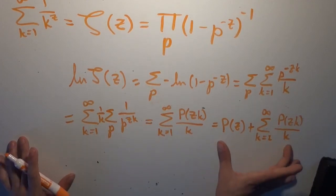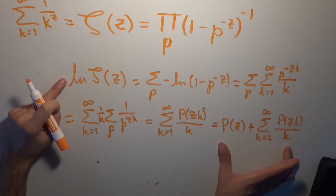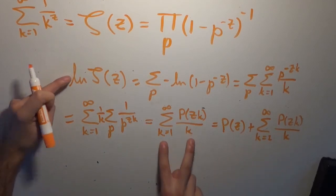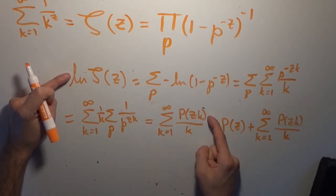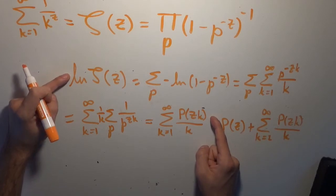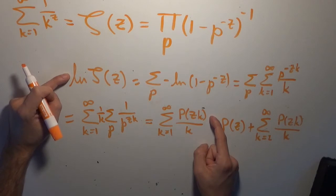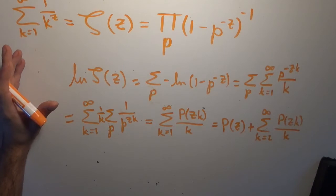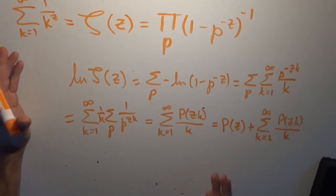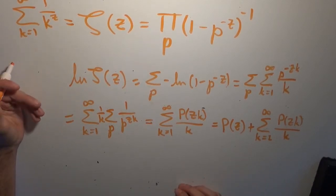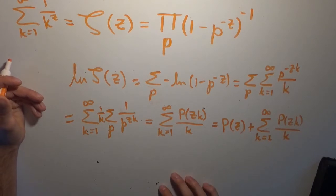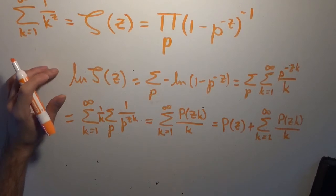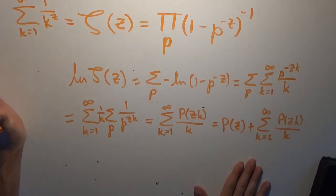We know this whole expression equals ln(ζ(z)). We're going to use this relationship in another video via a Möbius transformation to get directly at the prime zeta function — I'll prove that's valid next time. Right now I just want to explore a particular constant.